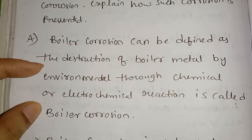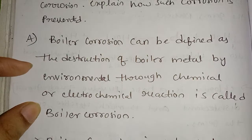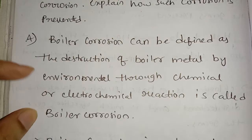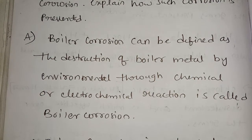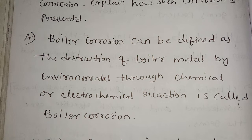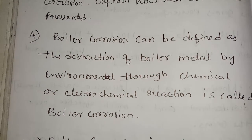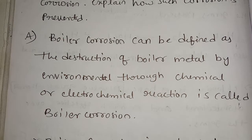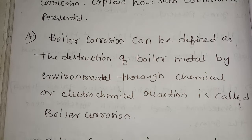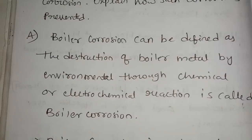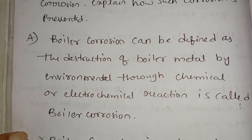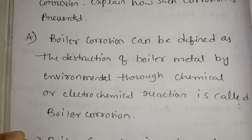Boiler Corrosion can be defined as the destruction of boiler metal by the environment through chemical or electrochemical reaction — this is called boiler corrosion. Boiler corrosion involves a metal reacting with a chemical or its environment. For example, we are going to use iron. If we paint a gate made of iron, the paint can prevent corrosion. It is a corrosion.